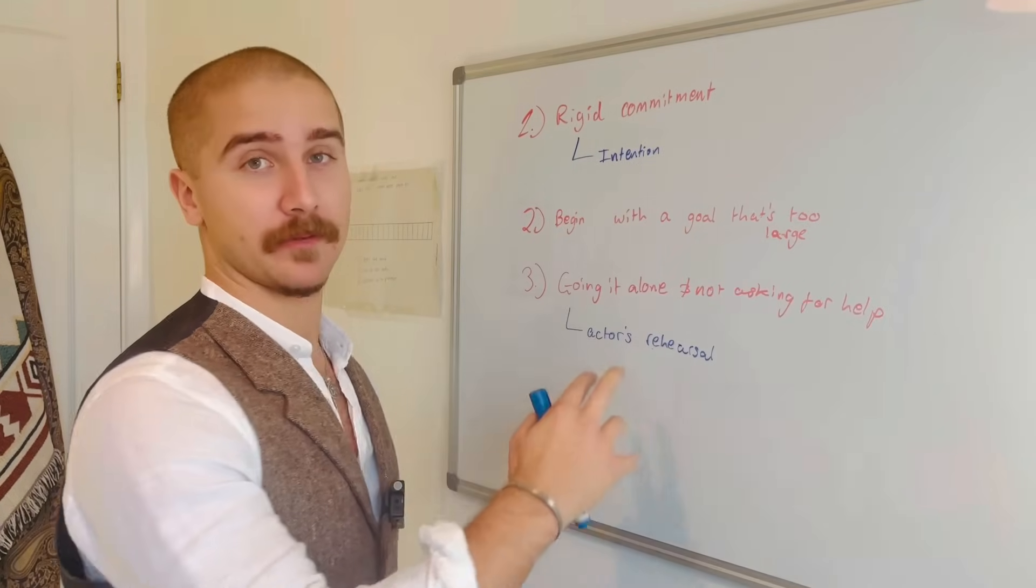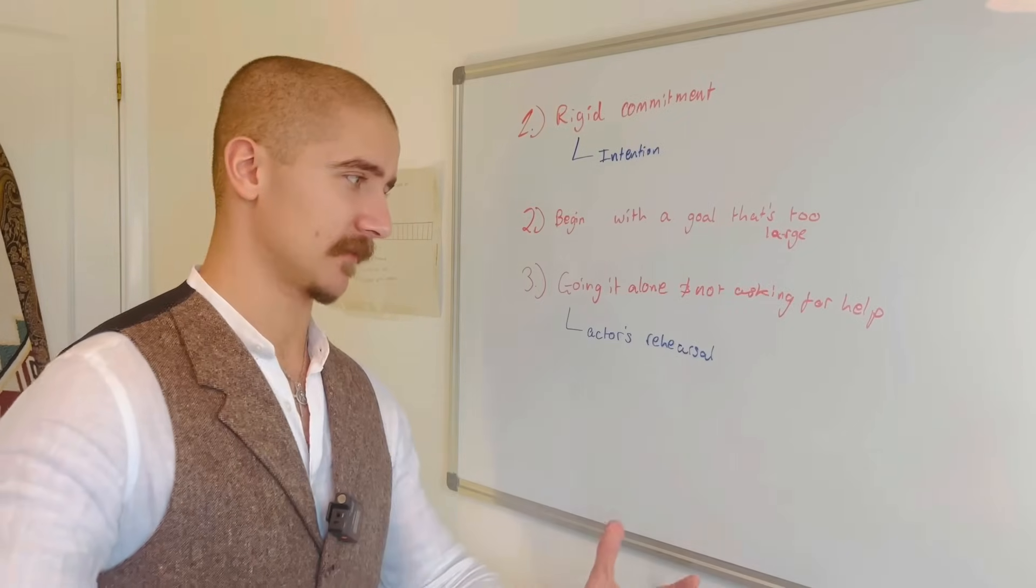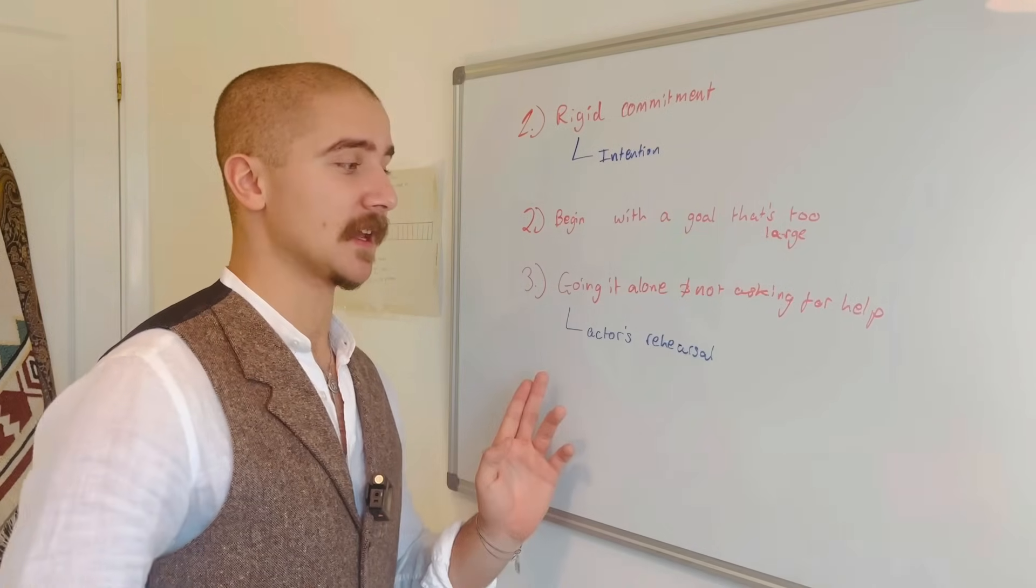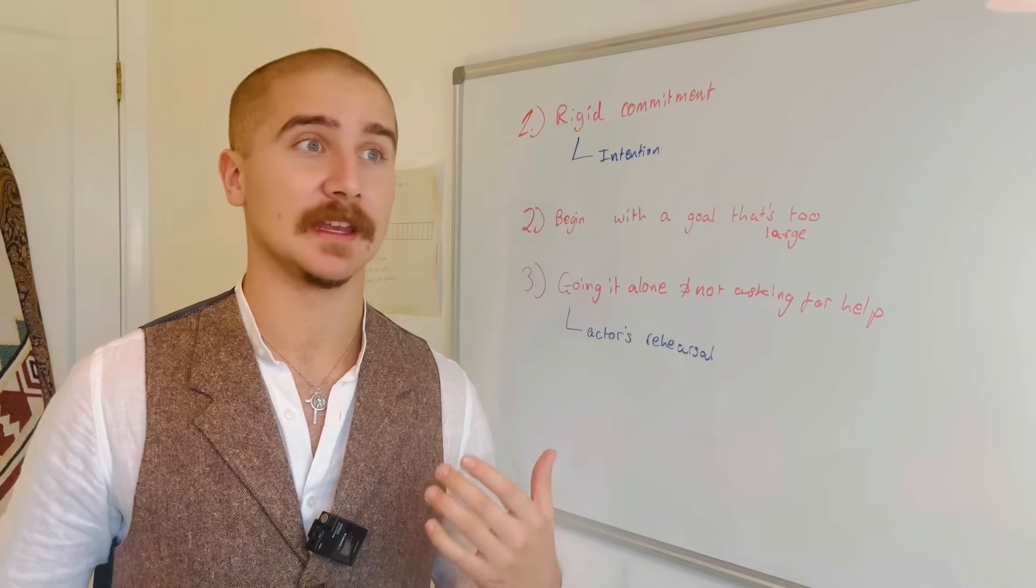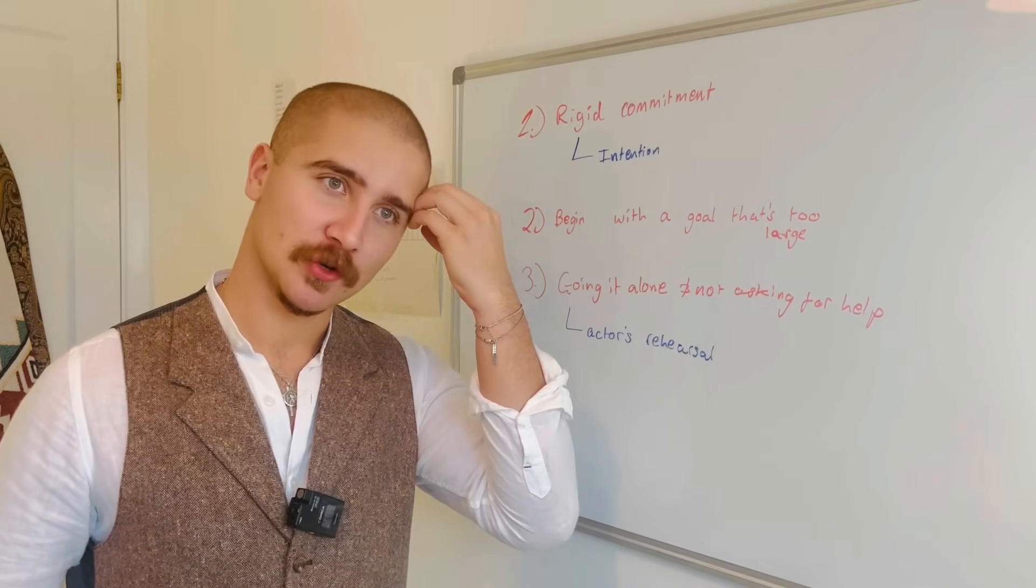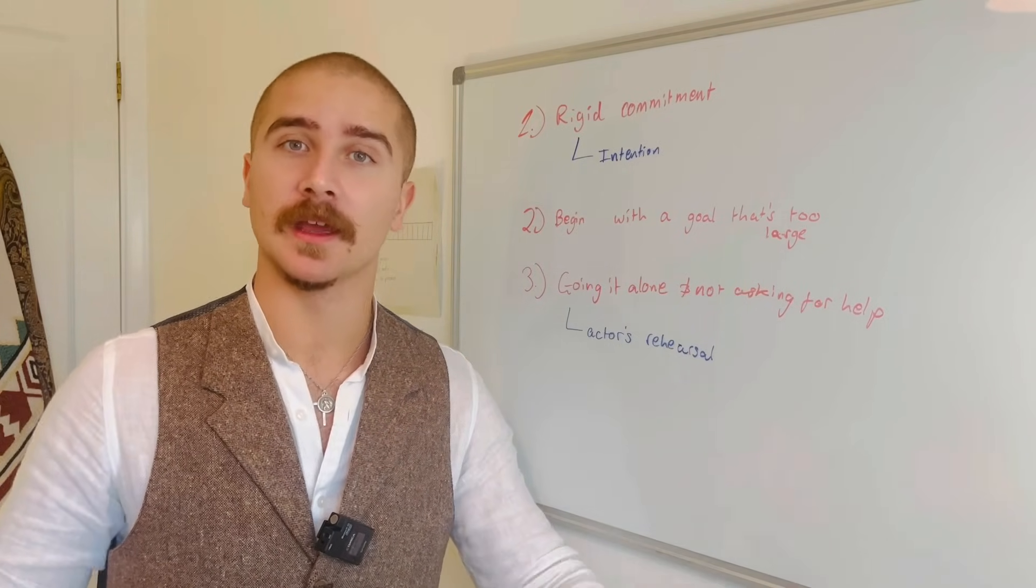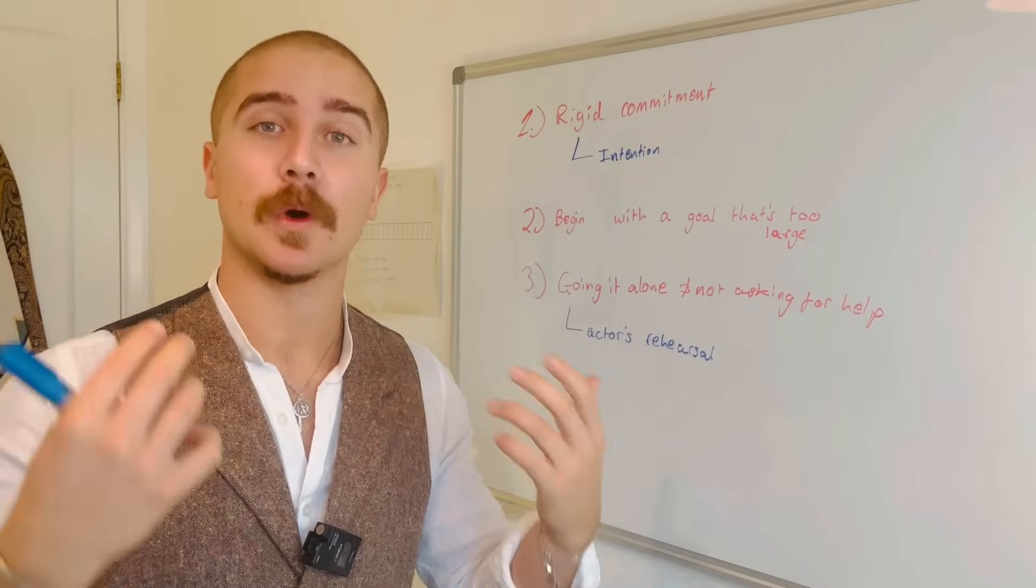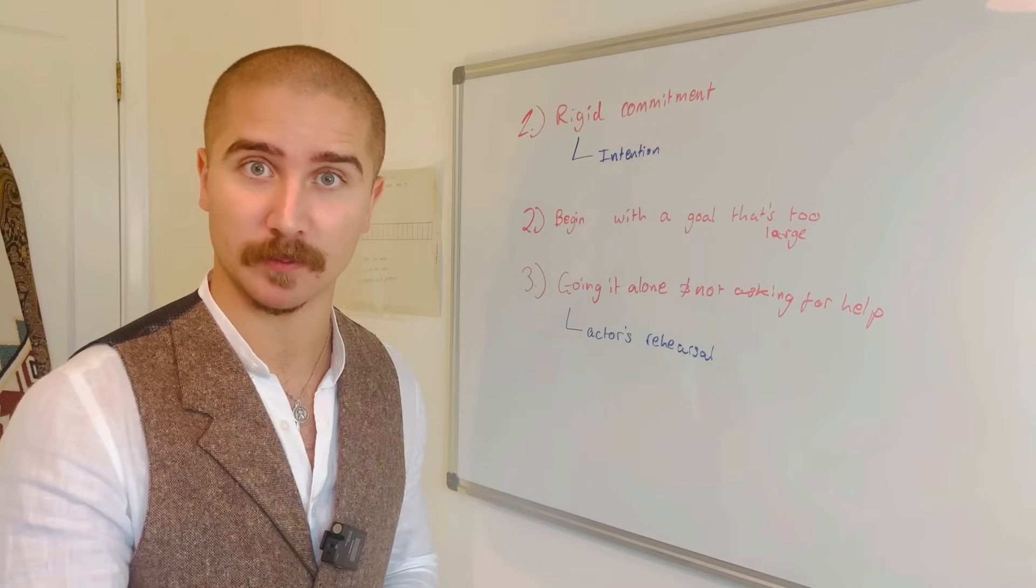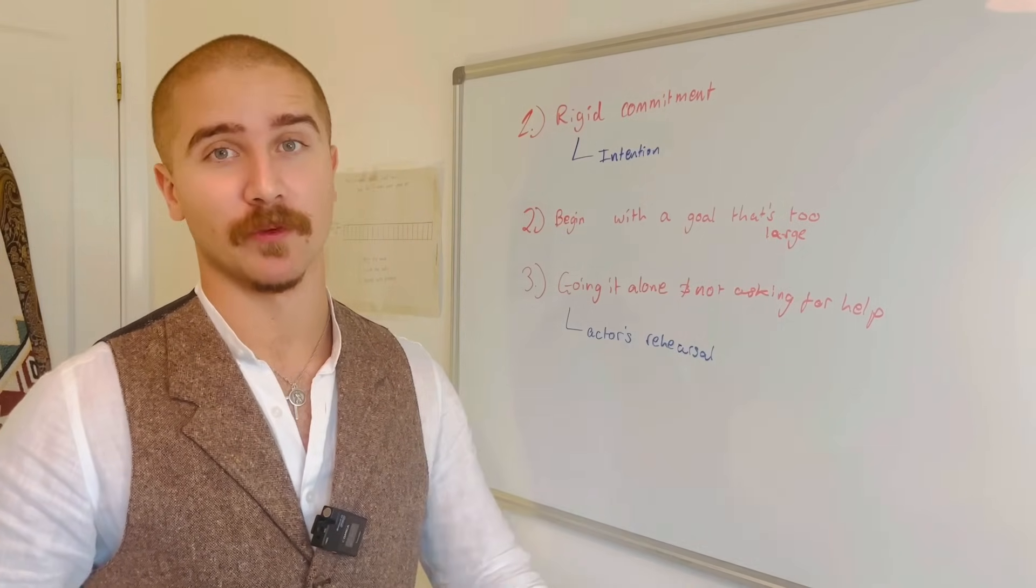The third barrier you might face is going it alone and not asking for help. Asking for help is a perfectionist's worst nightmare. But the way to combat this is reflecting situations you were in in the past where you were being perfectionistic and imagine yourself asking other people for help in that situation. Treat this mental imagery in the same way as an actor would treat rehearsing their lines. Hopefully this will highlight how your desire for control prevented you from asking for help.